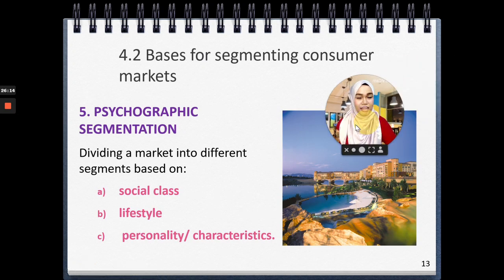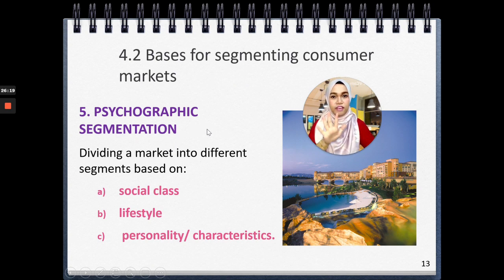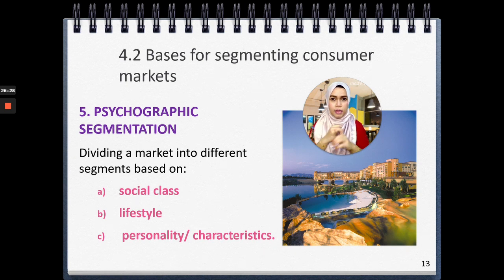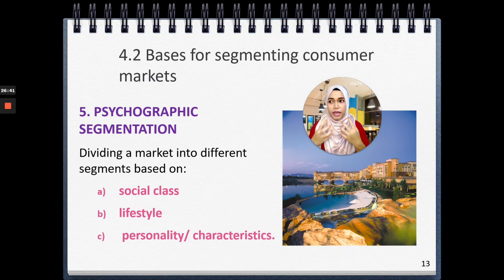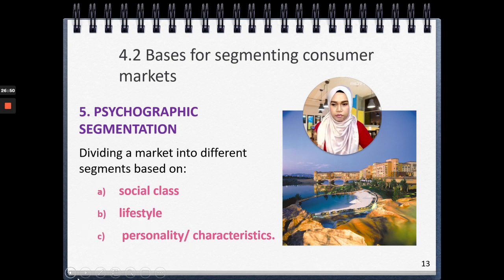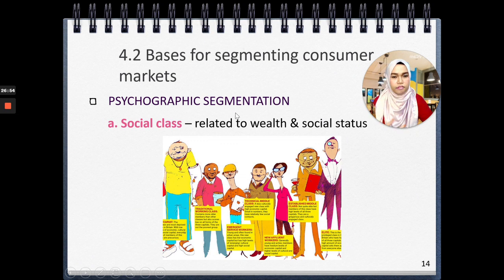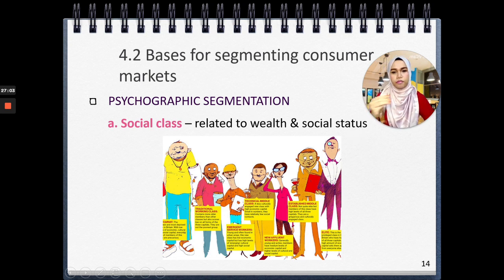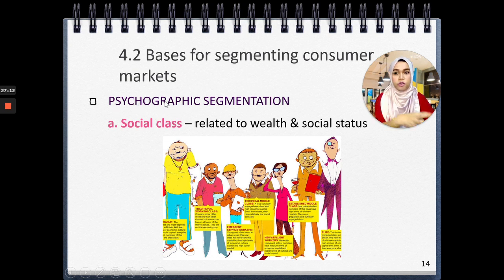The fifth and final segmentation base is psychographic segmentation, which divides the market based on social class, lifestyles, or personality and characteristics. For social class, this is related to wealth and social status — combining psychology and demographics, which is why it's called psychographic.